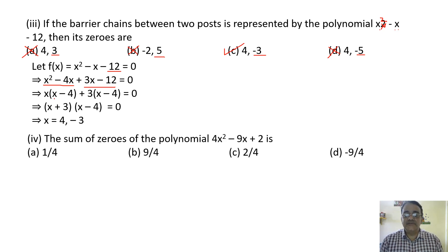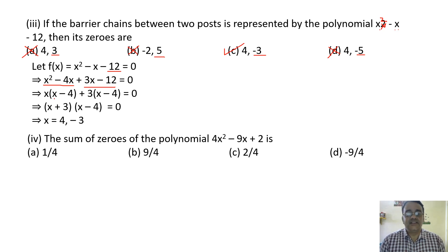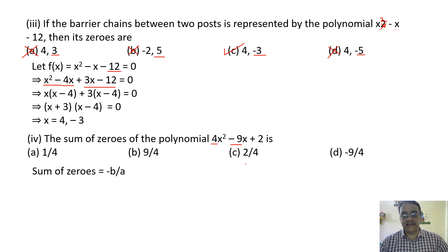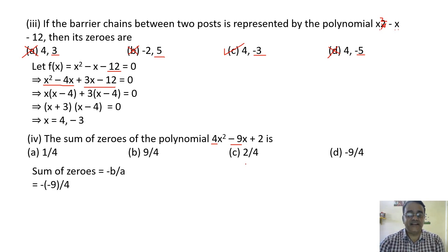The sum of zeros of the polynomial 4x squared minus 9x plus 2: the formula is minus b by a, where b is minus 9 and a is 4. So sum equals minus of minus 9 by 4, which is 9 by 4.